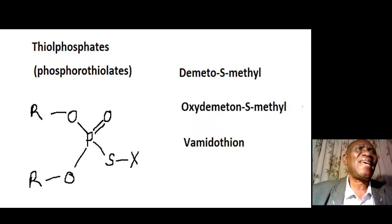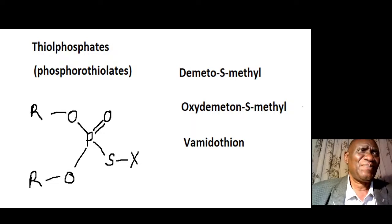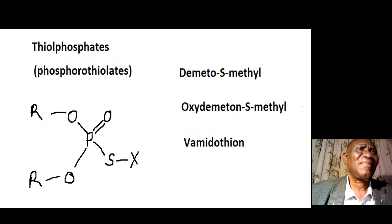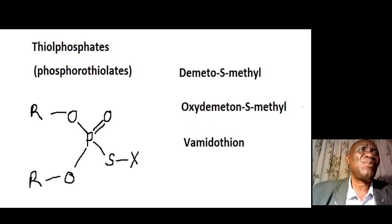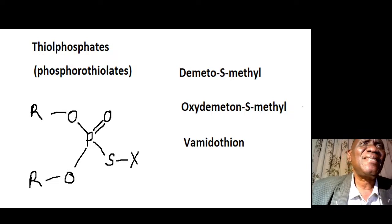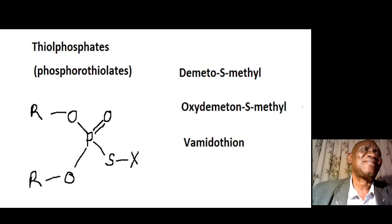Then we have thionothionates, or phosphothionothionates. The difference here is the position of sulfur: you can see that sulfur is present but a double bond is placed on oxygen. The difference is slight — for example, demeton-methyl oxide versus demeton-methyl thionothionate. These are the examples of this subgroup.